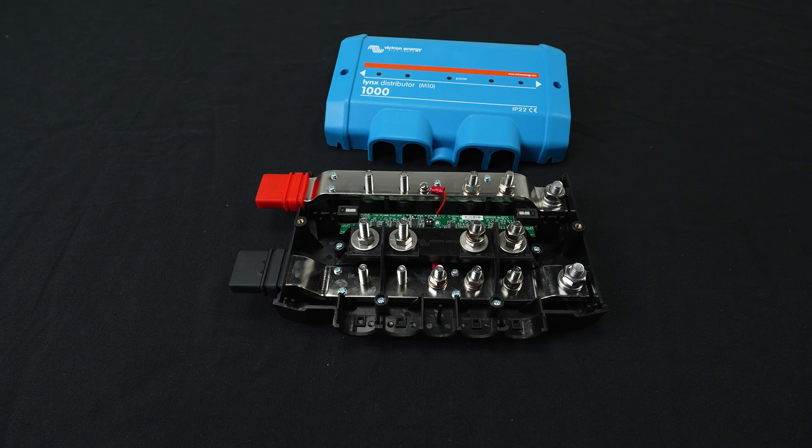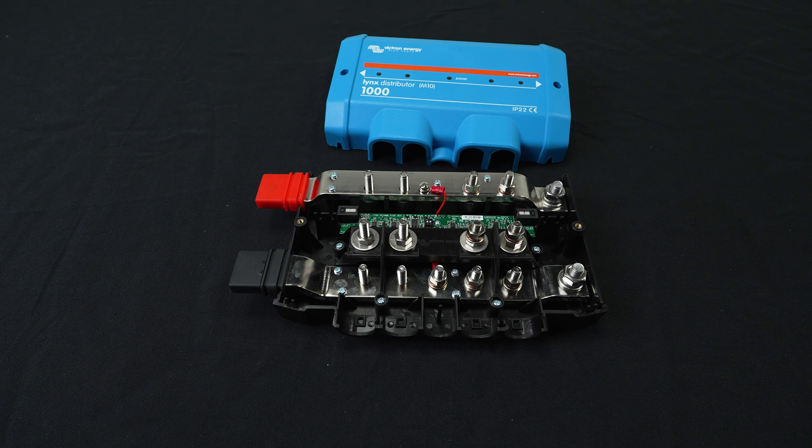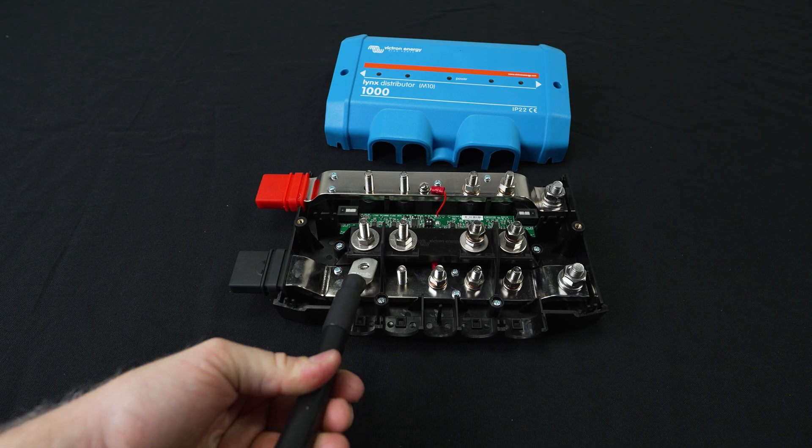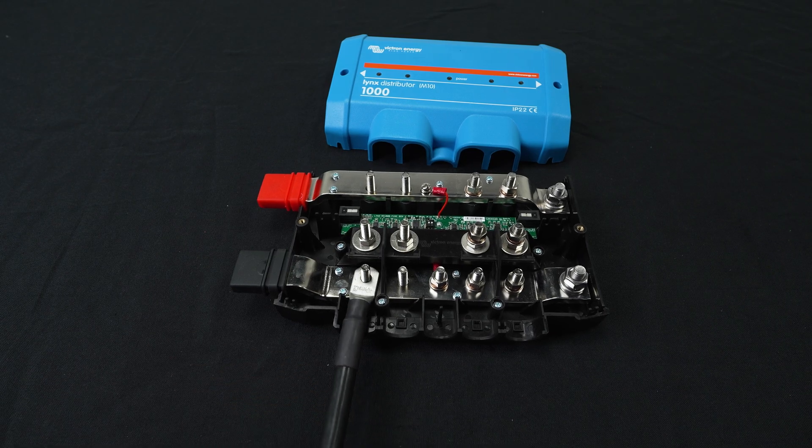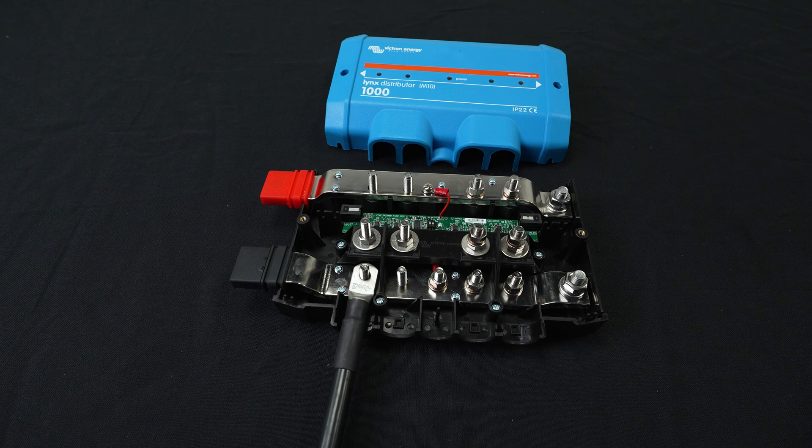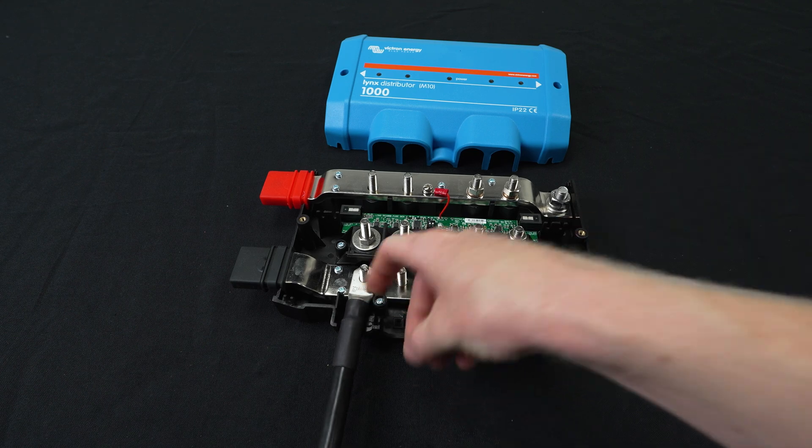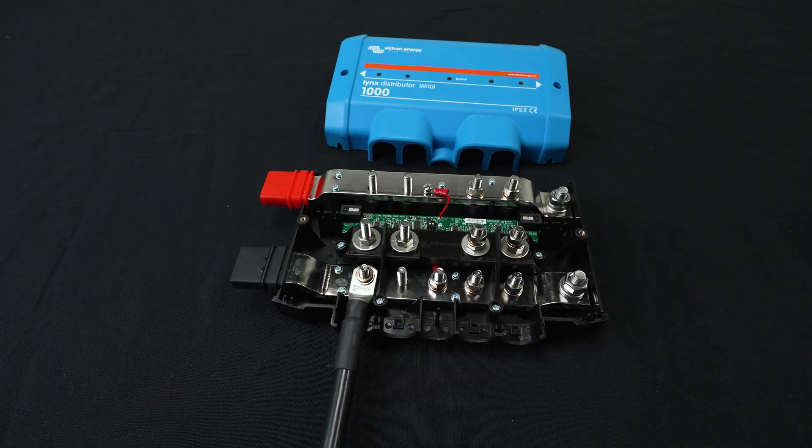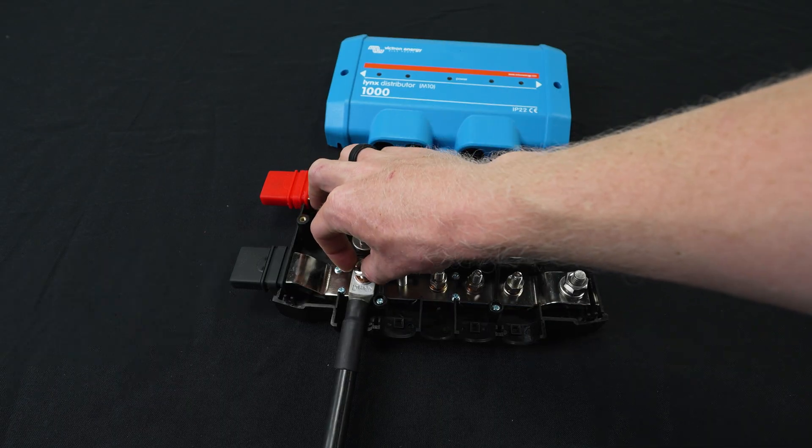So we'll attach our negative cable first. Today for our example we're going to use a 2 AWG cable with a 5/16 lug. And we're going to put our lug down first, then our flat washer, then our lock washer, and finally our nut.